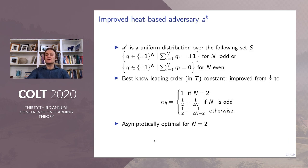We can also construct an improved adversary, which we call heat-based adversary. In this setting, the adversary is a uniform distribution over the following set of queues. The queues are the losses of experts. They are assigned pluses or minus ones, and our adversary is balanced in the sense that the pluses, the experts that are advanced, are in balance with the experts that have been sent back by this adversary.